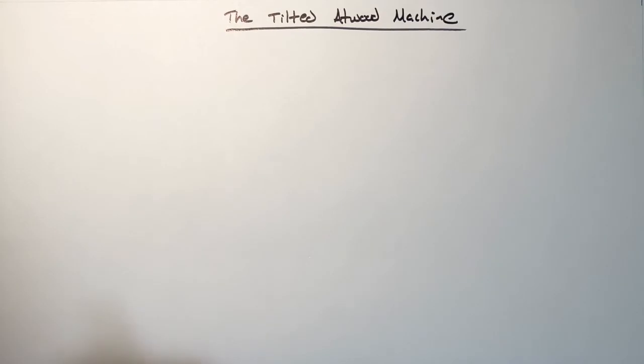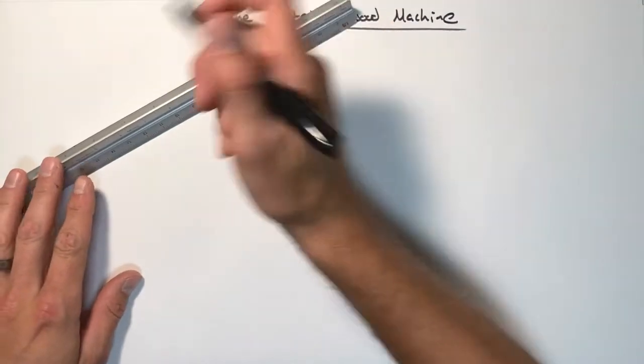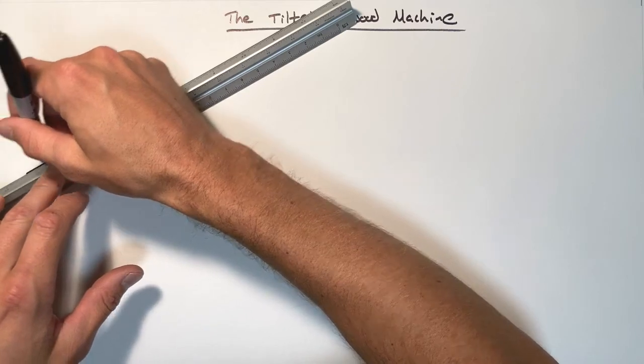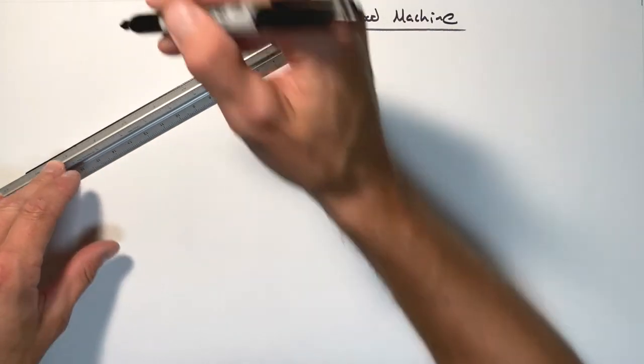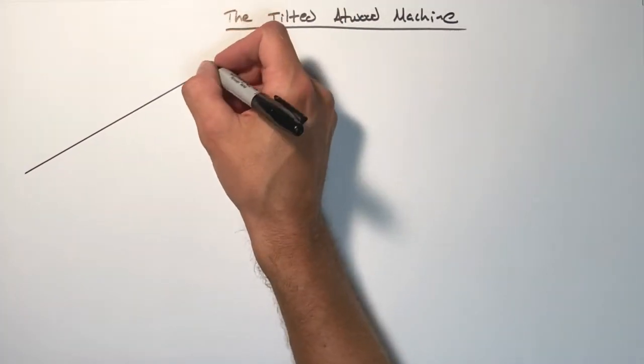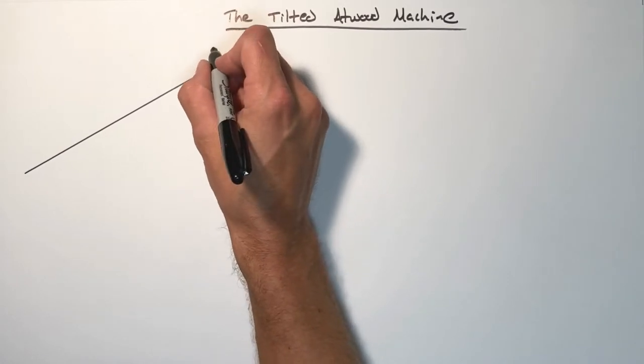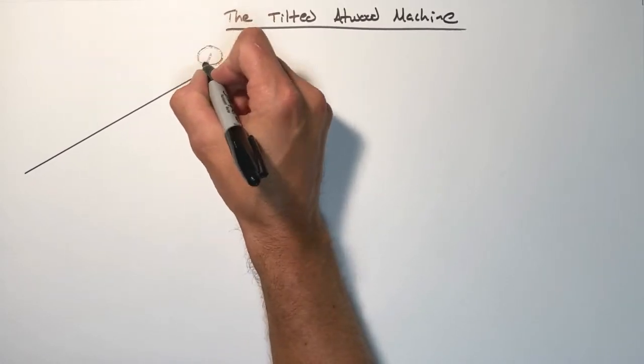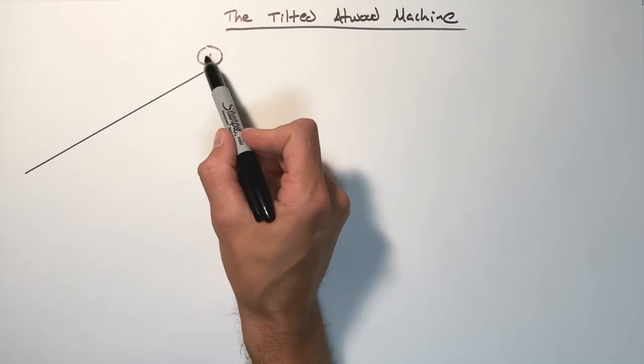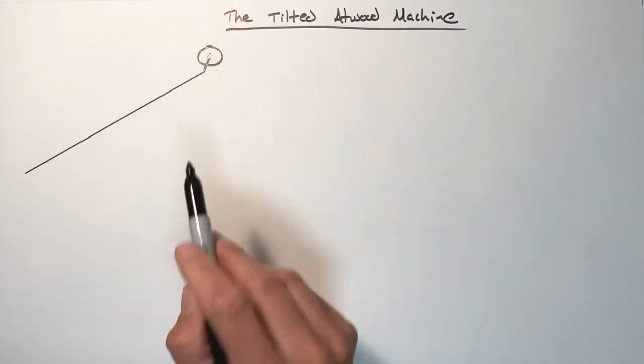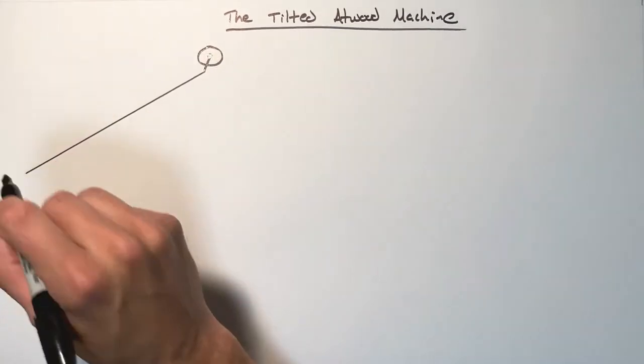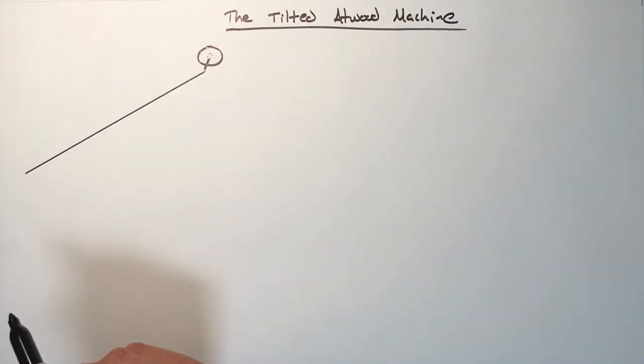Okay, so the Tilted Atwood Machine, just like many other Atwood Machine variants that we see in physics, is two blocks connected by a string that runs over some sort of pulley. Now this pulley for now, today, has no mass and no friction on it. That's something we'll cover later on further into physics.